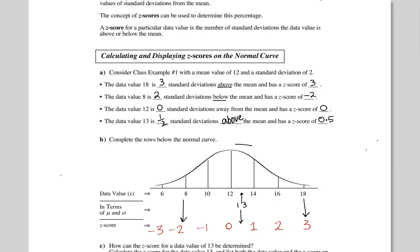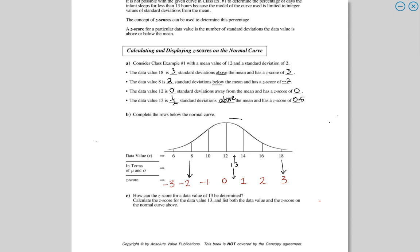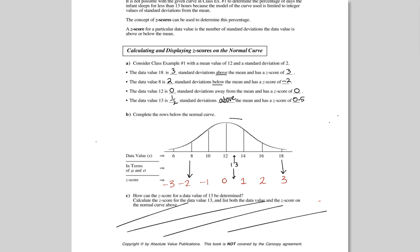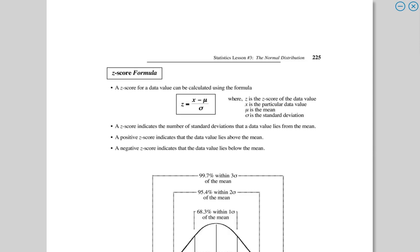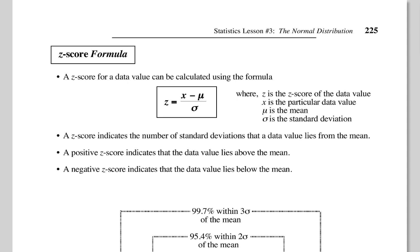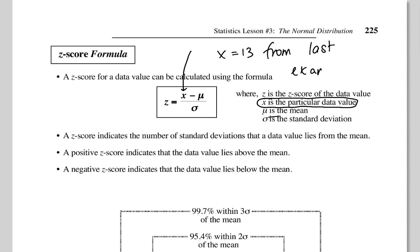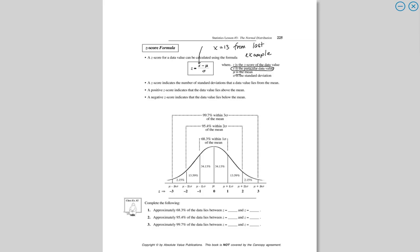The Z-score is a really simplistic way to look at normal distributions, and there's a nice formula that works with it. The Z-score formula will be on your data sheet — you don't have to memorize it, you just have to use it. X is the particular data value you're interested in. So if I want to know the Z-score for 13, X equals 13. Positive Z-scores mean you're above average; negative Z-scores mean you're below average.